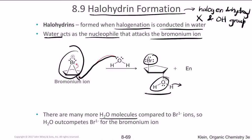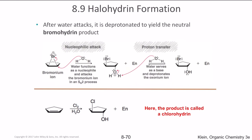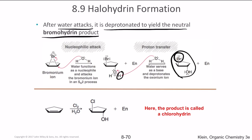There are many more H2O molecules compared to Br⁻ molecules, so H2O outcompetes bromine for the bromonium ion, resulting in halohydrin formation rather than halogenation of both carbons. After water attacks, the intermediate is deprotonated to yield the bromohydrin product. If chlorine is used instead we call it chlorohydrin.